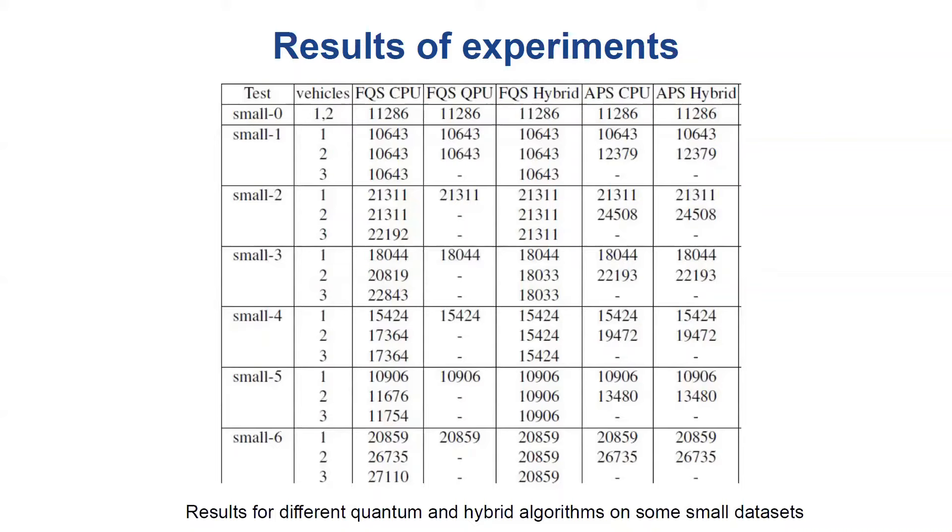First, we investigated full QUBO solver on test cases small 0 to small 9. On every test except small 0, we ran experiments for 3 different numbers of vehicles, 1, 2, and 3, on a quantum processor, its classical simulator, and using a hybrid solver. On small 0 tests, there were only 2 orders, so we tested only 1 and 2 vehicles. As we can see in the table, QBSolve full QUBO solver CPU and full QUBO solver QPU execute better final results in test cases with more vehicles.